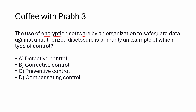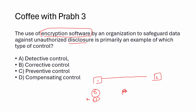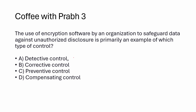Next question: use of encryption software by an organization to safeguard data against unauthorized disclosure is a primary example of what? We encrypt data — user one sends data encrypted into ciphertext using a key. Even if sent over the network and an attacker intercepts it, they cannot read it. So the purpose of encryption is to make sure no one can read that data. It is not a detective control. No incident has occurred, so it's not corrective. It is a preventive control — the primary objective is to ensure no one can read the data; even if downloaded, a key is needed. Compensating comes when the primary control is ineffective. Answer is C — preventive control.